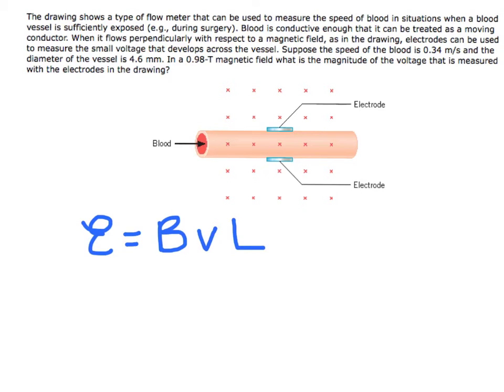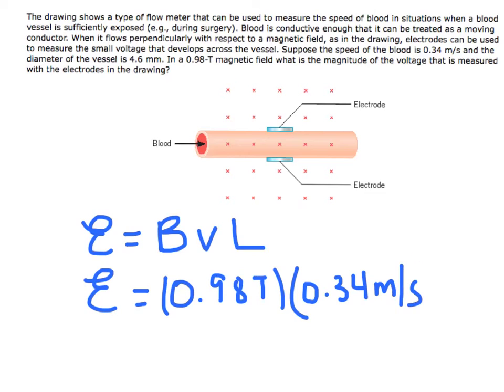So, you substitute the values that you have into this equation. B is equal to 0.98 tesla times V is 0.34 meters per second times L is 0.0046 meters.